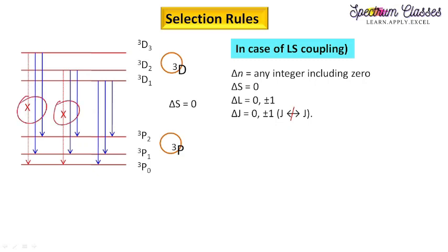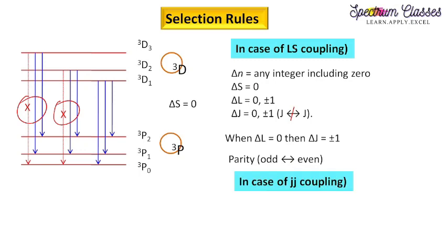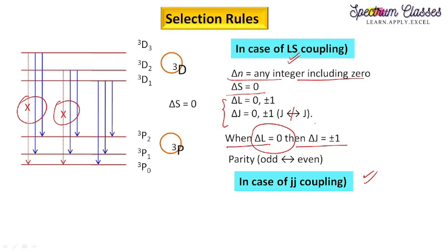I have shown some crosses — you can see here that these lines will not appear in the spectrum. The rules are based on LS coupling and JJ coupling. For both, delta N can be any integer including 0, and delta S is 0 for LS coupling, which holds very good agreement, but it doesn't hold good for JJ coupling. These two rules are common for LS and JJ coupling. If delta L is 0, then delta J must be plus or minus 1; in that case delta J equals 0 is not followed. Also parity will be changed — delta l (small l) must be plus or minus 1, which is called conservation of angular momentum.